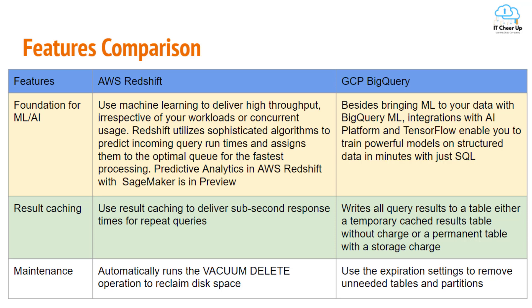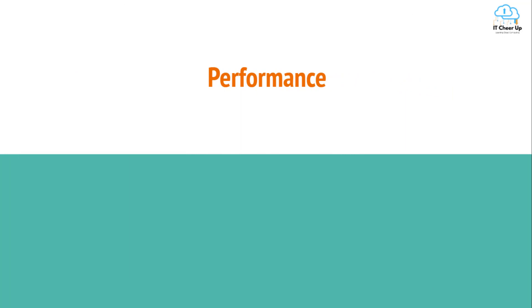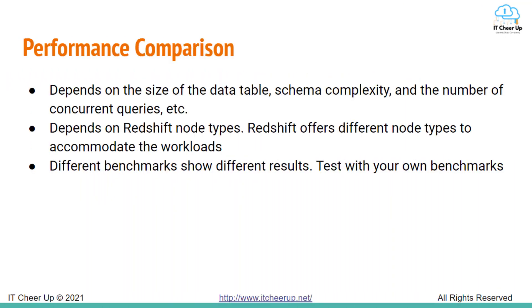On maintenance: AWS Redshift automatically runs vacuum delete operations to reclaim disk space, while GCP BigQuery uses expiration settings to remove tables and partitions. Performance is tricky across all data warehouse solutions — it depends on data table size, schema complexity, and the number of concurrent queries. Different benchmarks show different results, so I suggest testing with your own benchmarks in both systems. Take advantage of AWS Redshift's 2-month free trial and GCP's $300 credit with a free-tier account. I've included two different 2019 performance result links in my blog, and you may want to search for more recent test results.